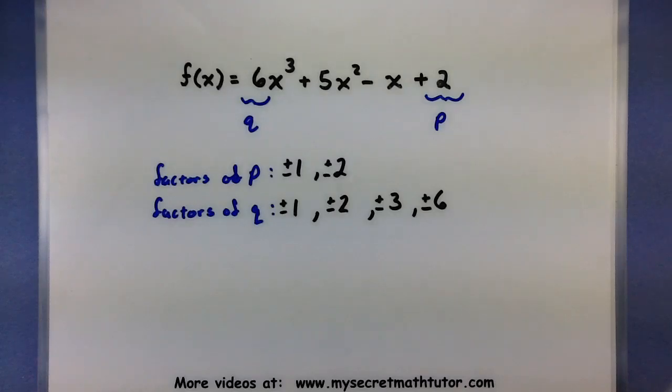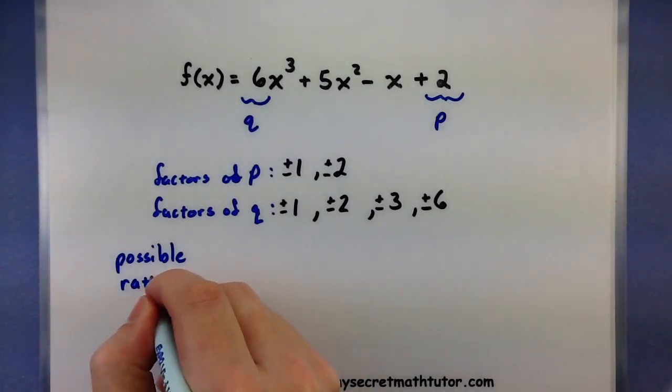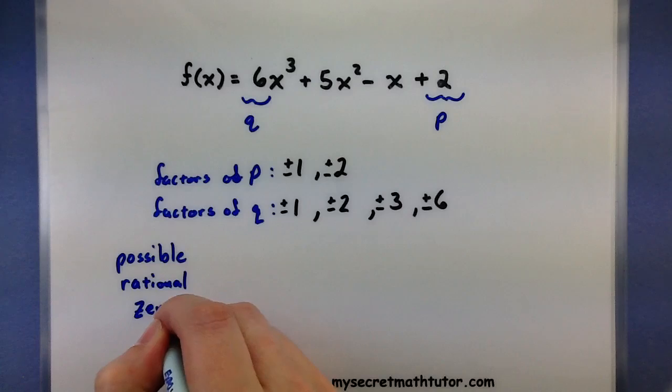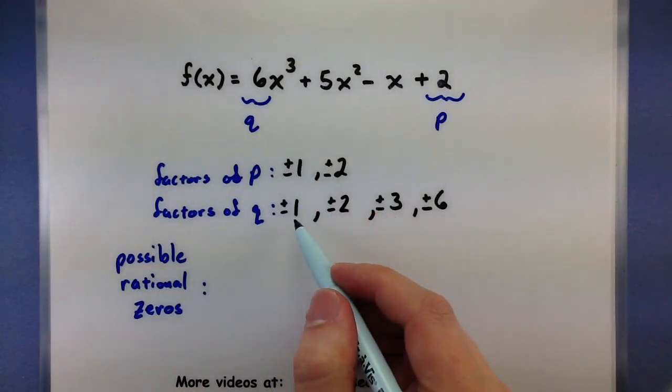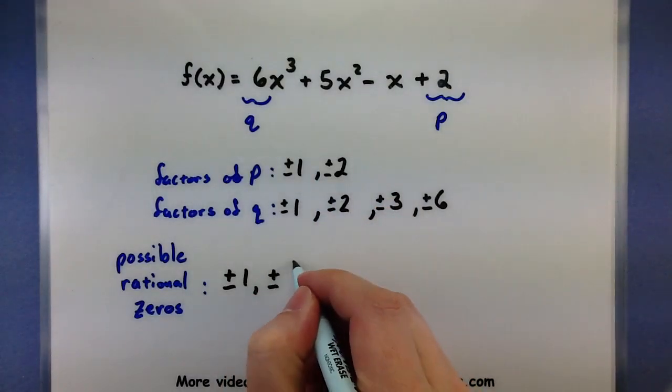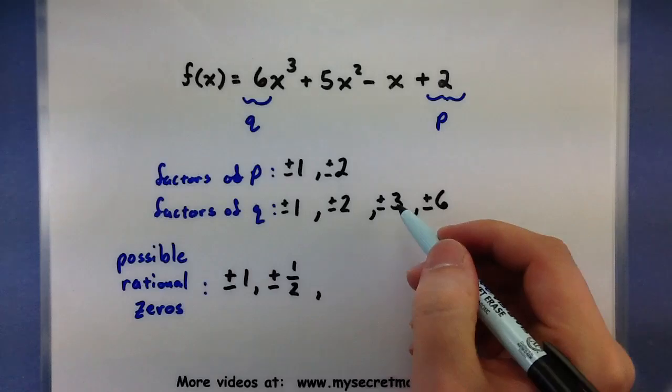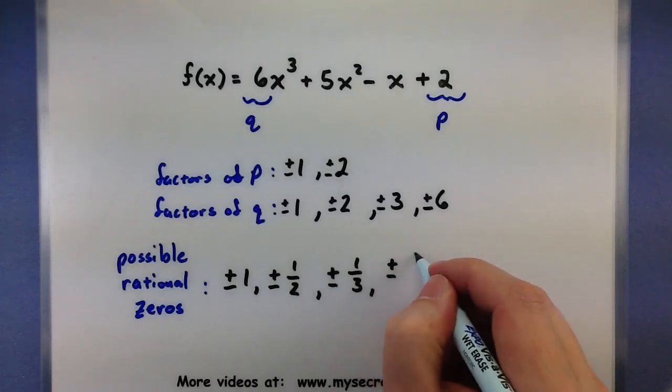Alright. Now that you've listed out the factors of p and the factors of q, you want to start listing out your possible rational zeros. That's where you start making fractions out of these things. So I like to take one of these numbers at a time, create fractions with all the rest, grab the next number, do fractions with all the rest. Let's see what happens. So 1 divided by 1 is 1, 1 divided by 2 is a 1 half, 1 divided by 3 is 1 third, and 1 divided by 6 is 1 sixth.